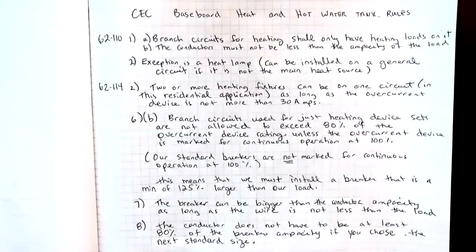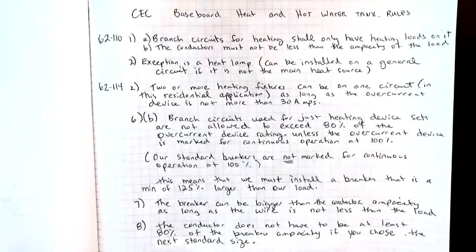Subrule 7 says the breaker can be bigger than the conductor ampacity, as long as the wire ampacity is not less than the load. Subrule 8 says that the conductor ampacity does not have to be at least 80% of the breaker ampacity if you have chosen the next standard size — so if that is the next available size, the breaker can be bigger than the wire ampacity and the wire does not have to be 80% of it.